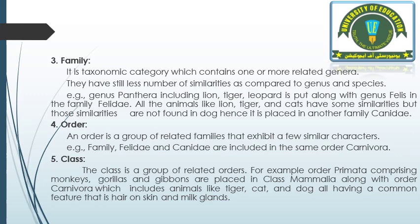Number three is family. Family is a taxonomic category which contains one or more related genera. They have still fewer similarities compared to genus and species. As we move upward in the hierarchical taxonomy categories, we have less similarity and more diversification. For example, genus Panthera including lion, tiger, and leopard is placed along with genus Felis in the family Felidae. All these animals have some similarities, but those are not found in dog, so dog is placed in another family, Canidae.